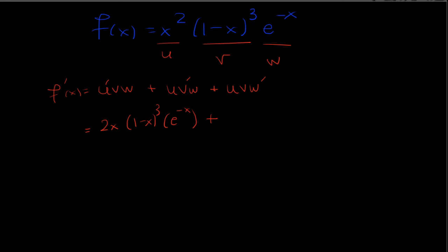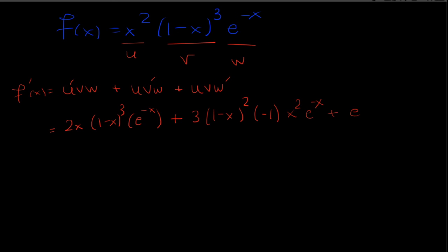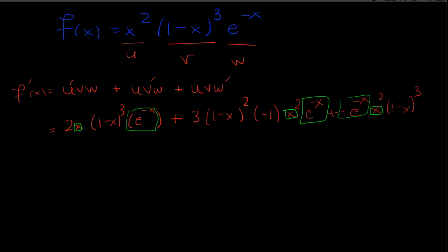The derivative of x² is 2x, leaving everything else the same. For v', apply the chain rule to (1−x³): bring down 3, keep the inside the same, subtract 1 in the exponent, and multiply by the derivative of the inside; times u = x² and w = e^(−x). For the last term, the derivative of e^(−x) is −e^(−x), times x²·(1−x³). They all share a common factor of x and e^(−x).